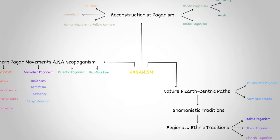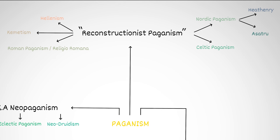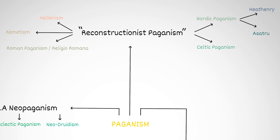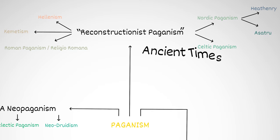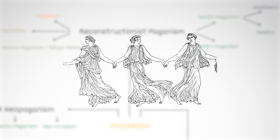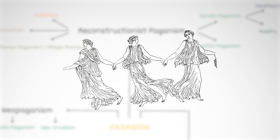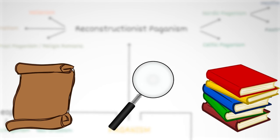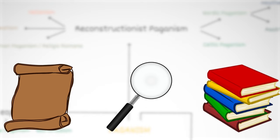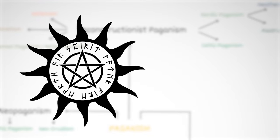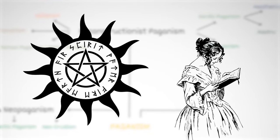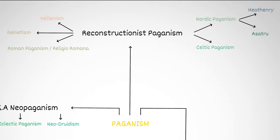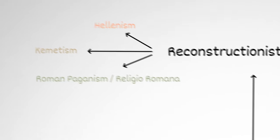Reconstructionist Paganism is about bringing back the old religious beliefs and practices from ancient times. Reconstructionist Pagans want to follow the ancient practices as closely and accurately as possible. They use historical texts, archaeological findings, and scholarly research to try to recreate ancient rituals and beliefs, and don't want to change anything. Pretty much every ancient Pagan tradition can fall into this category.